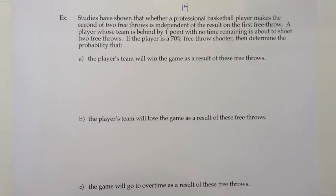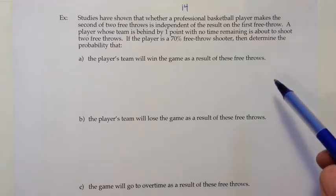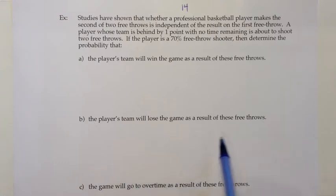Continuing on to page 14, I want to show another application of the special multiplication rule and independence. Studies have shown that whether a professional basketball player makes the second of two free throws is independent of the result of the first. A player whose team is behind by one point with no time remaining is about to shoot two free throws. If the player is a 70% free throw shooter, determine the probability that (A) the team wins, (B) they lose by missing both, or (C) the game goes to overtime.